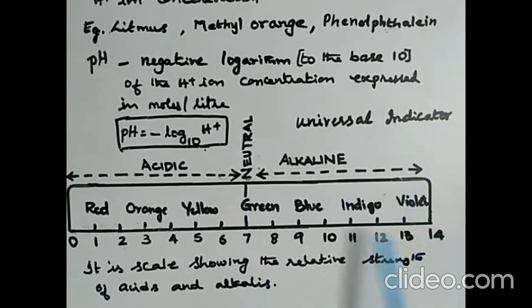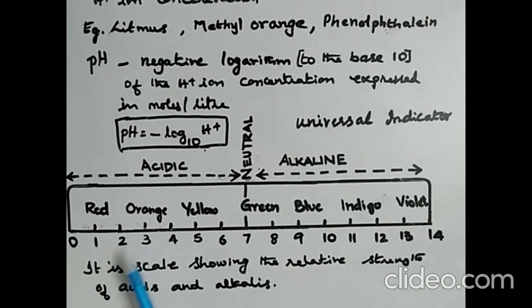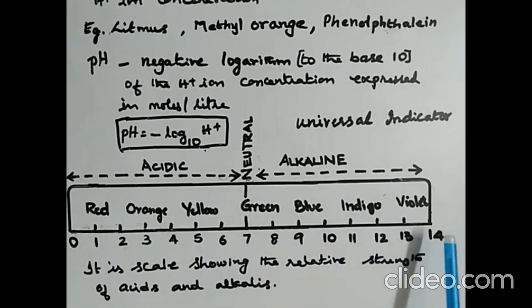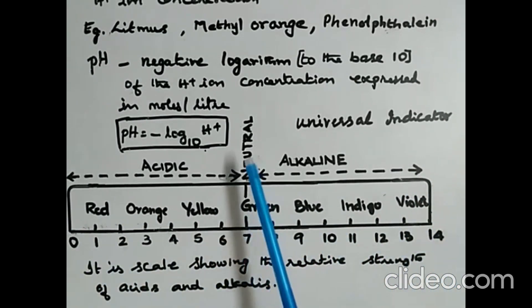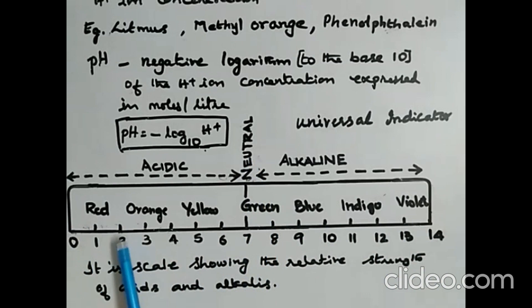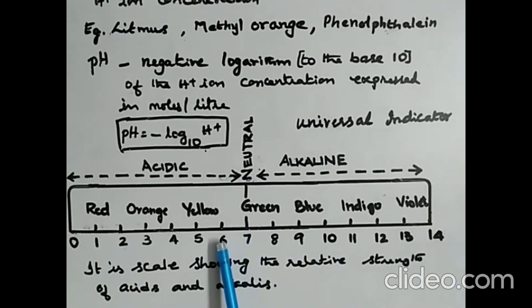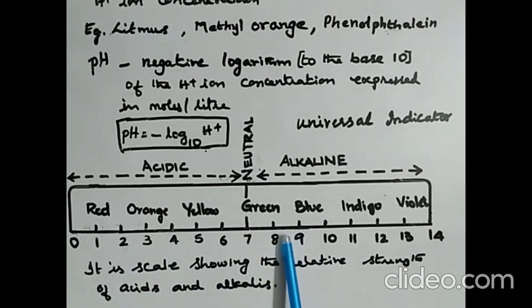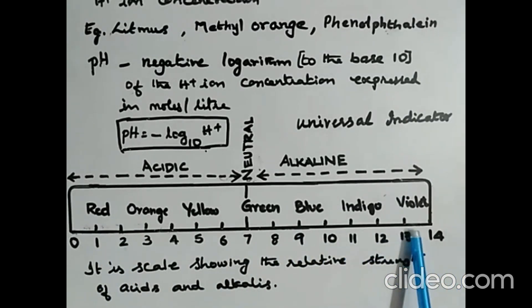This is the diagram of a pH scale, showing the relative strength of acids and alkalis, ranging from 0 to 14. 7 indicates neutral; below 7 indicates acidic; above 7 is alkaline. A value of 6 is slightly acidic, and 1 is highly acidic. 8 is slightly alkaline, and as you move toward 14, alkalinity increases — 14 is strongly alkaline.